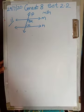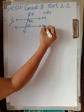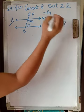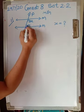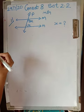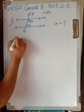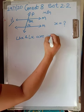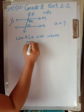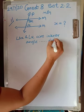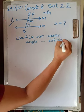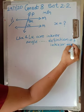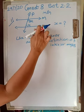Now coming back to our first problem. They have said that M is parallel to N. If M is parallel to N, find the value of X. Now we know that these two angles are interior angles by definition. So we may write: angle 3X and angle X are interior angles, by the definition of interior angles. It is given that M is parallel to N, so these are interior angles and they will be supplementary.